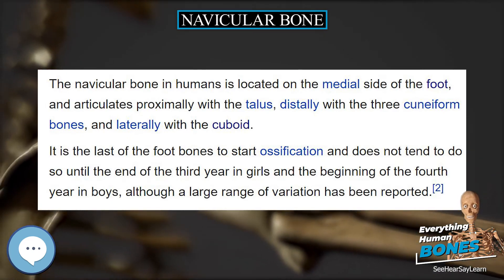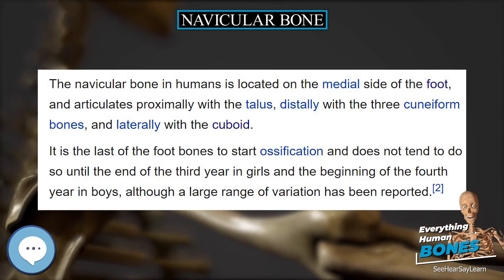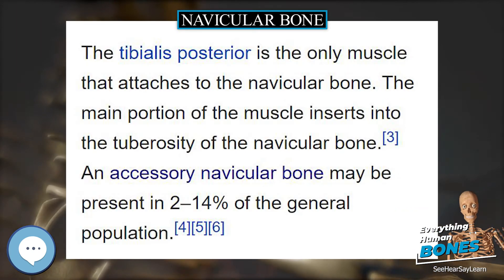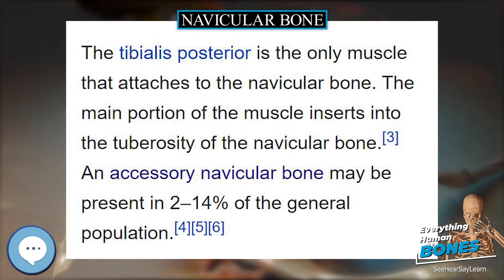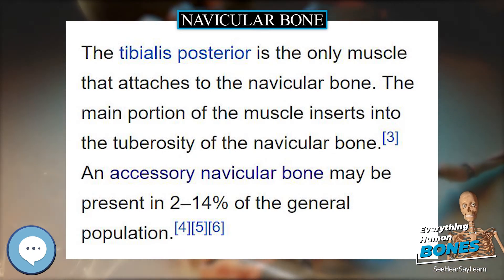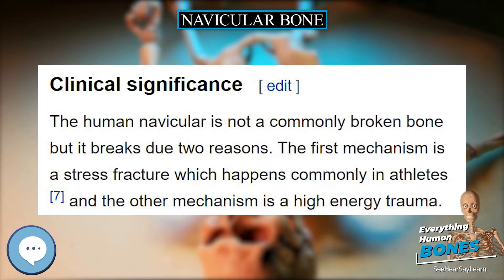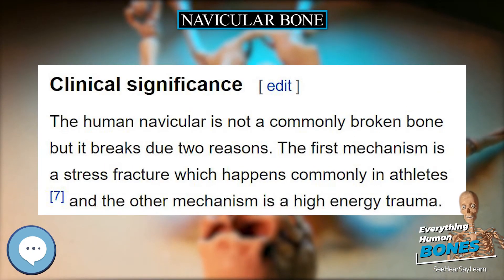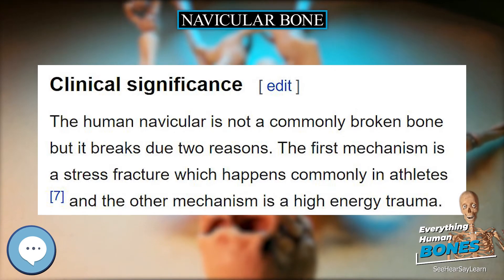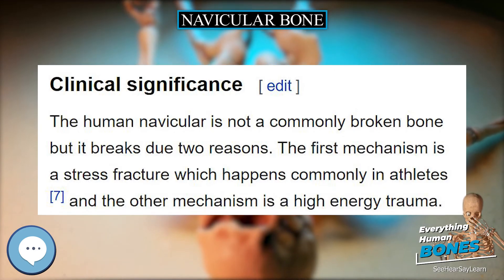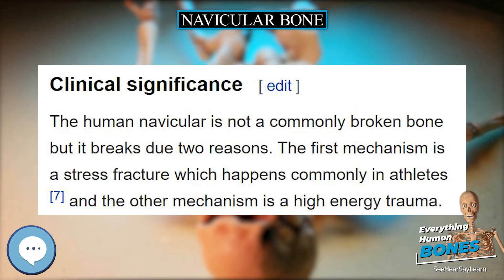The central tarsal bone in the hock of the horse is homologous and analogous to the navicular bone of the human foot, and thus the navicular bone in the horse is a different structure from the eponymously labeled bone in humans.